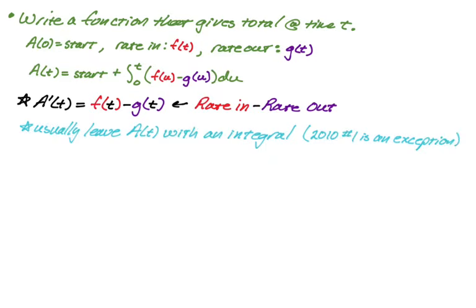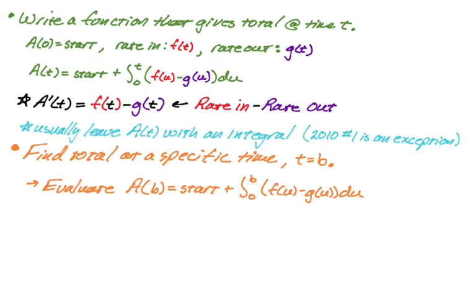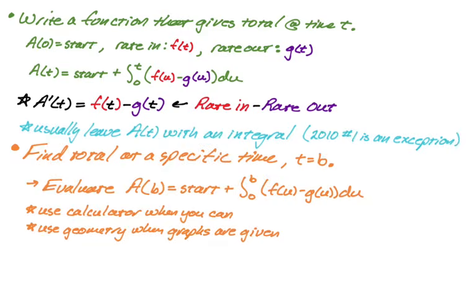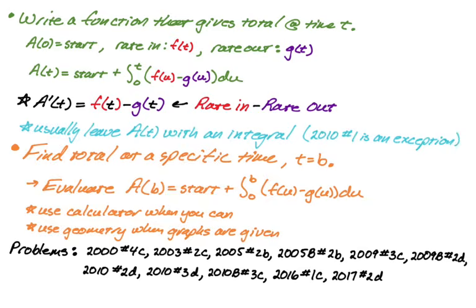Now, another thing that you would have to do that's very related to this is find the total at a specific time. So that would just mean evaluate your function that you just wrote, A of t, at whatever time they're giving you. So I'm going to say we're going to evaluate A of b, which would be the start plus the integral from zero to b of f of u minus g of u du. I'm using a dummy variable there. And you're almost certainly going to use a calculator. If it's a calculator problem, don't even think about not using a calculator. But it could be that they give you graphs or tables and ask you to approximate the integral of f, approximate the integral of g, and then subtract them. So it could be that you have to use geometry. So here's a list of problems. This is not exhaustive because it's kind of hard to decide where to classify some of the things. But these problems definitely sort of encapsulate this idea.